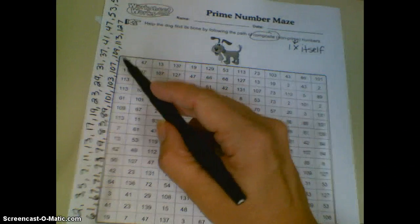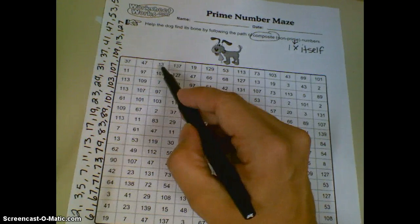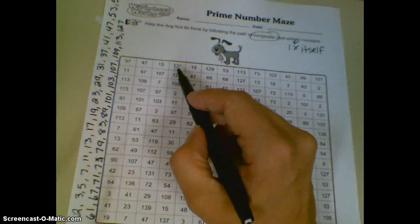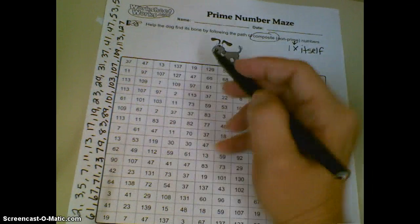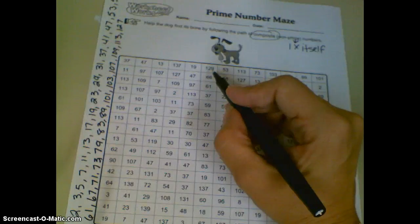So taking a look, 37 is prime, 47 is prime, 13 is prime, 137 is prime, 19 is prime, 129.